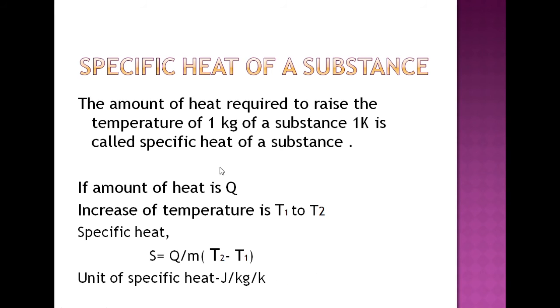As it is the introduction of this chapter, we are just learning about the definitions. So again, the amount of heat required to raise the temperature of 1 kg of a substance by 1 Kelvin is called specific heat. If the initial temperature is T1 and the final temperature is T2, then the difference is T2 minus T1, and the unit is Joule per kg per Kelvin.